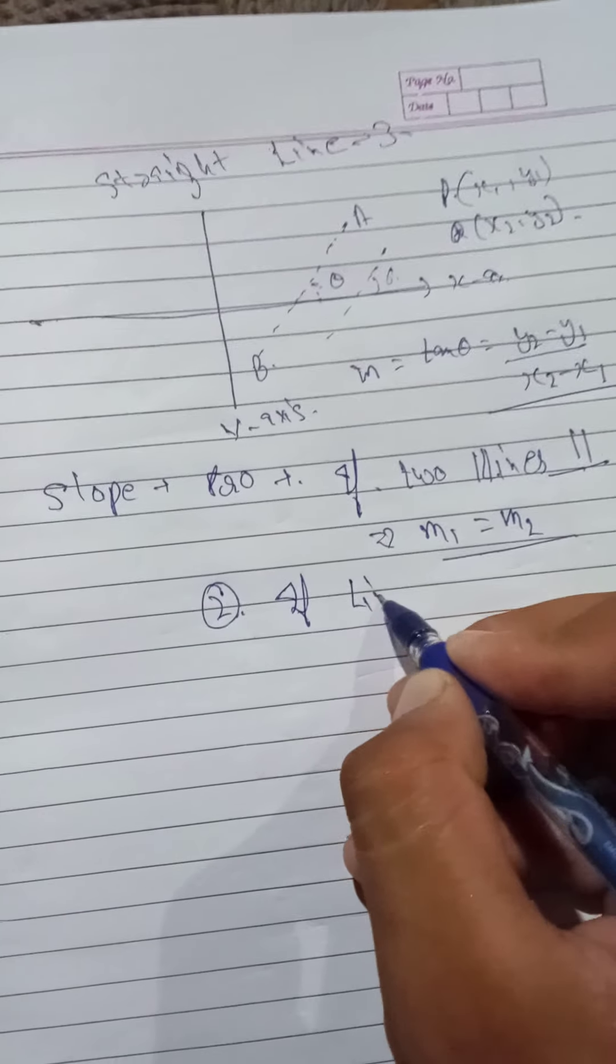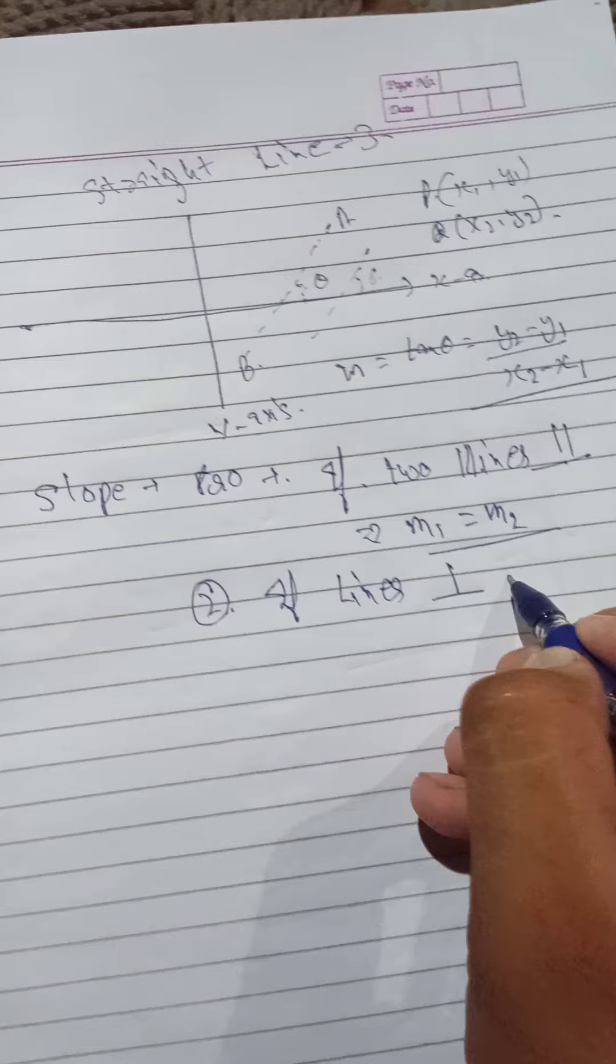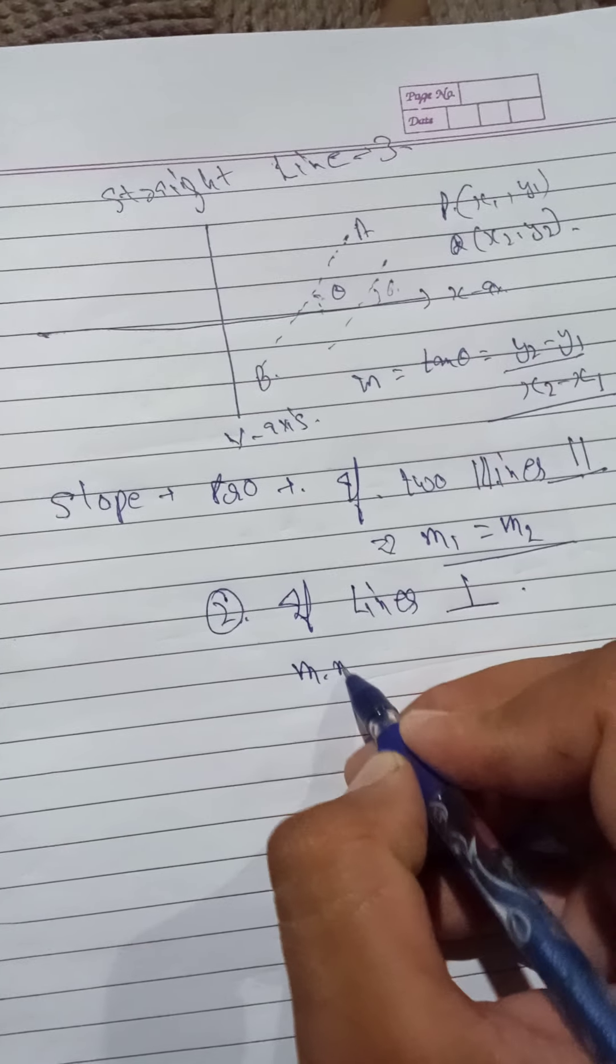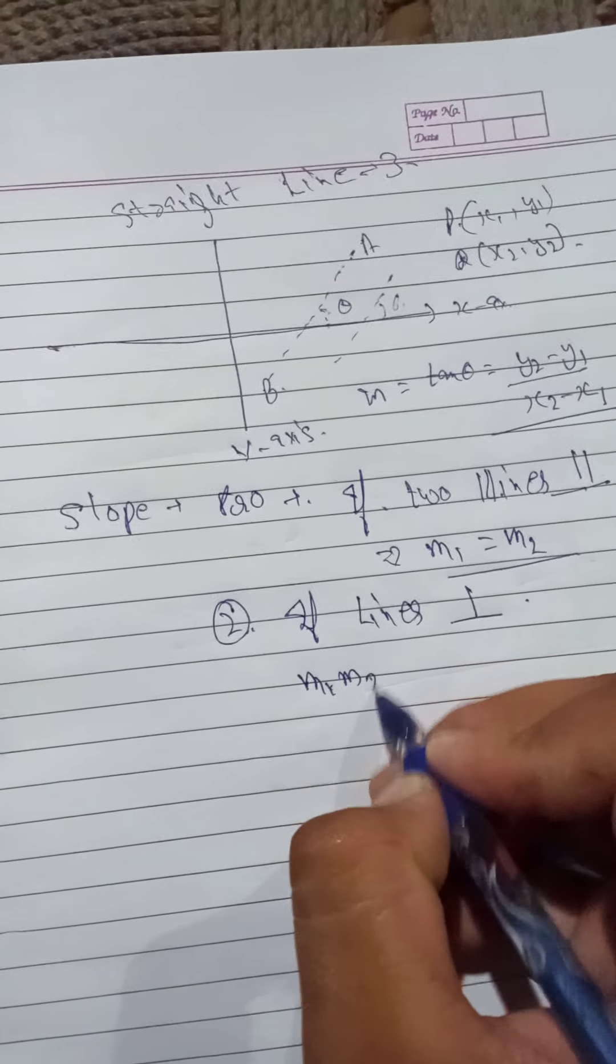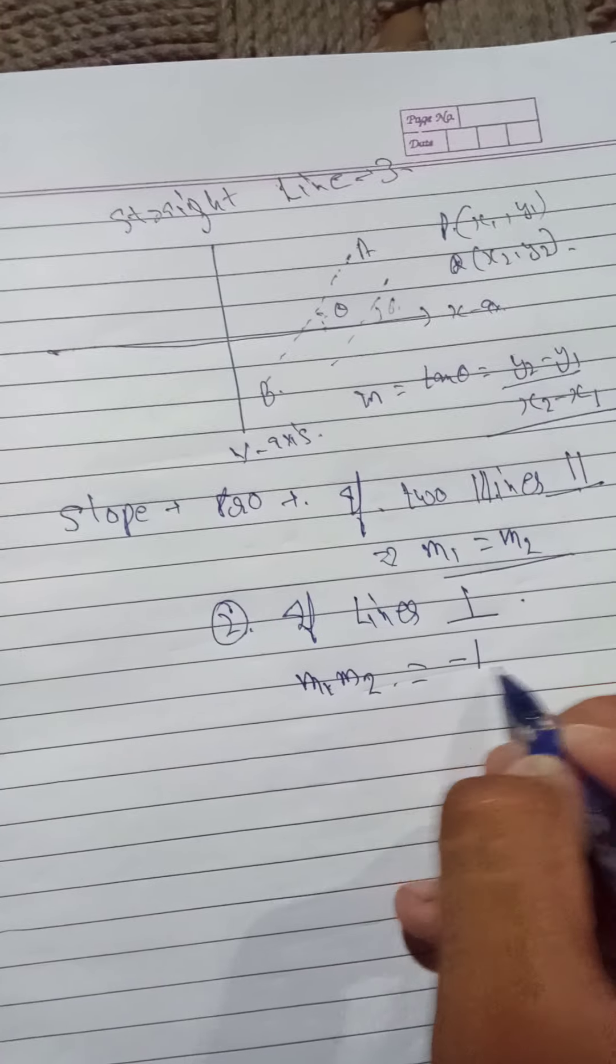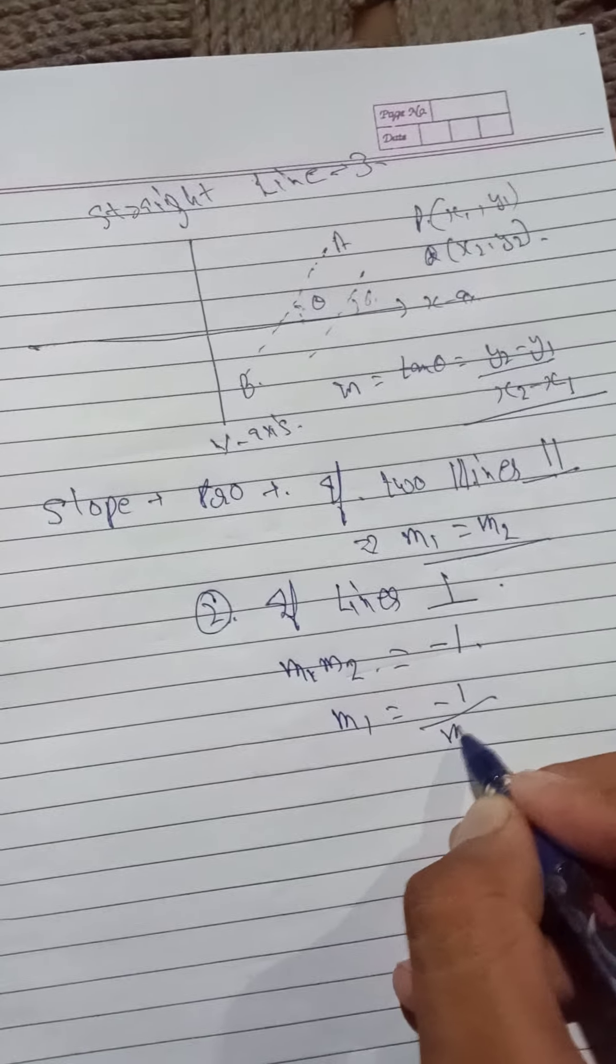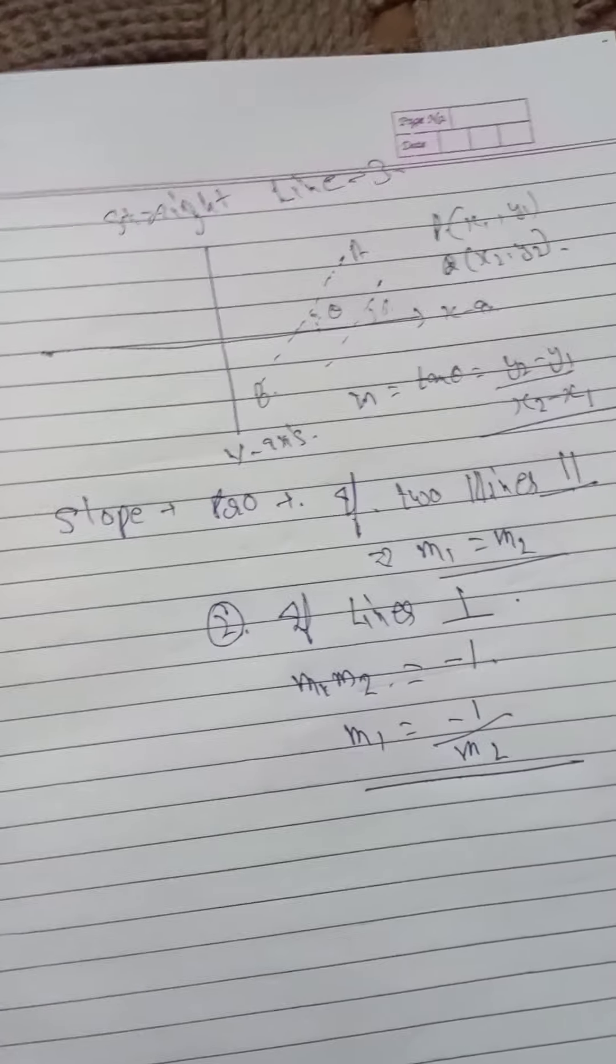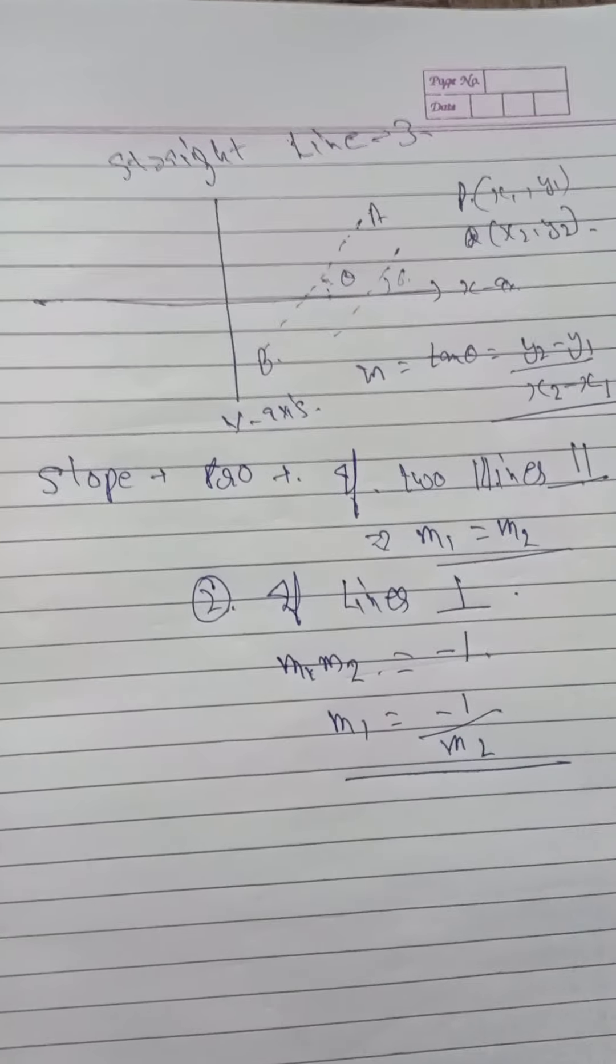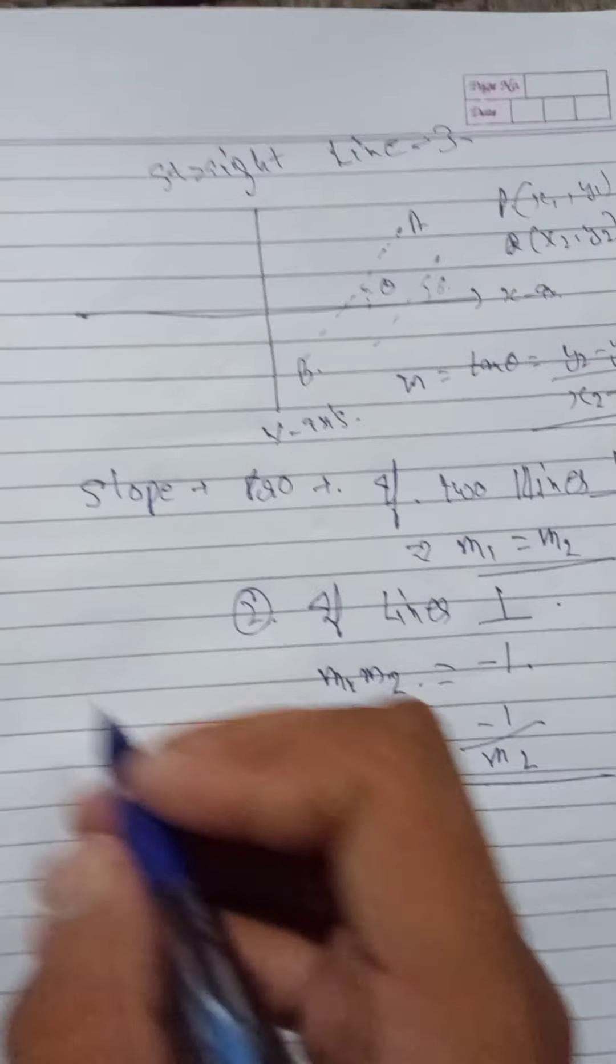And the second result will be if two lines are perpendicular, then m1 dot m2, means m1 into m2, is equal to minus one, or m1 is equal to negative reciprocal of m2. This is the property for perpendicular lines.